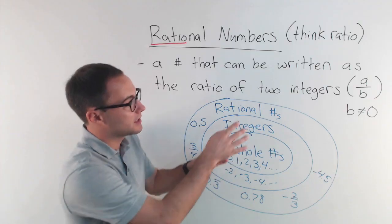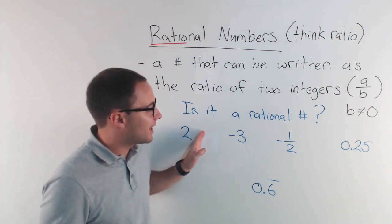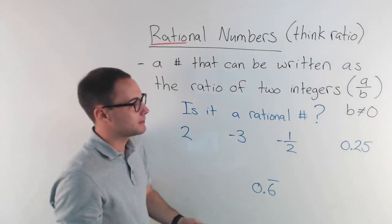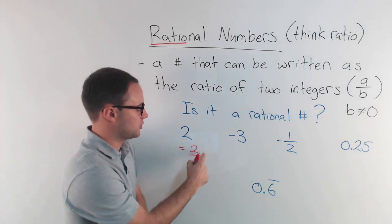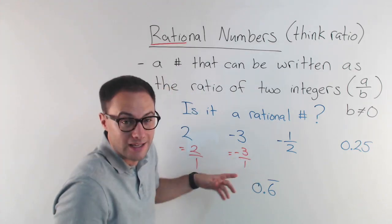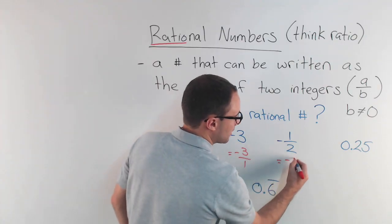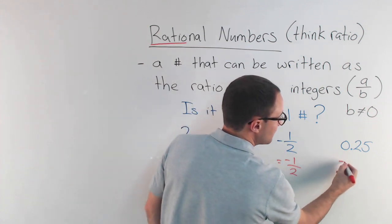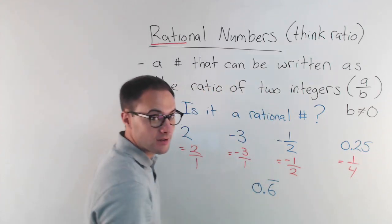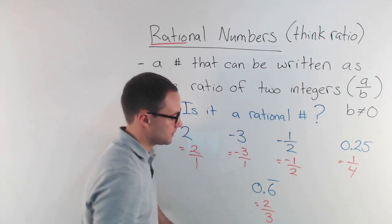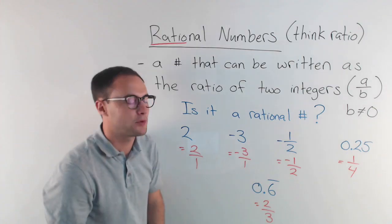Let's look at some examples of rational numbers and go over the definition. Can we write it as a ratio of two integers where the denominator is not zero? Two can be written as two over one — both integers, good. Negative three can be written as negative three over one — both integers. Negative a half can be written as negative one over two, or one over negative two — both integers. 0.25 is the same as one-fourth, and 0.6 repeating is the same as two-thirds. So all of these are examples of rational numbers.